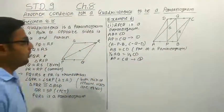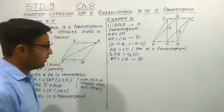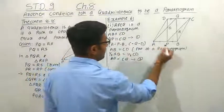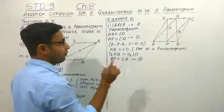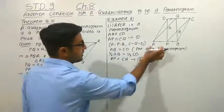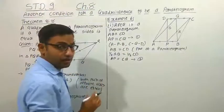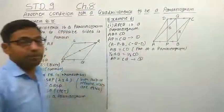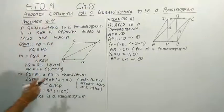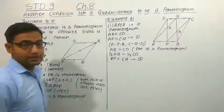From equation number 1 and 2, in the quadrilateral APCQ, one pair of opposite sides — AP and CQ — is equal, and they are also parallel. So now using theorem 8.8, we can say that APCQ is a parallelogram.